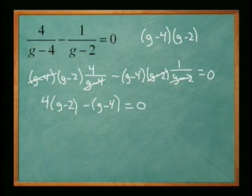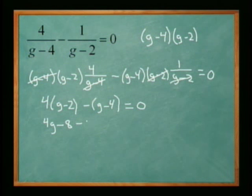Alright, so let's multiply this out. Four times g minus two: four times g is 4g, four times negative two is negative eight. Negative one times g is negative g, negative one times negative four is positive four.